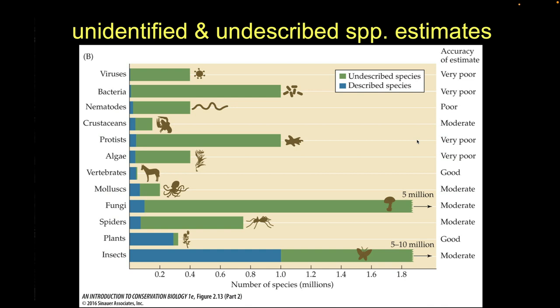The vast majority of stuff on Earth is undescribed — with the exception of vertebrates, where we've pretty much catalogued what's out there. We have a pretty good idea for plants too, and we've spent a lot of time characterizing insects. But with the exception of those groups, the vast majority of true species diversity is unknown and undescribed.